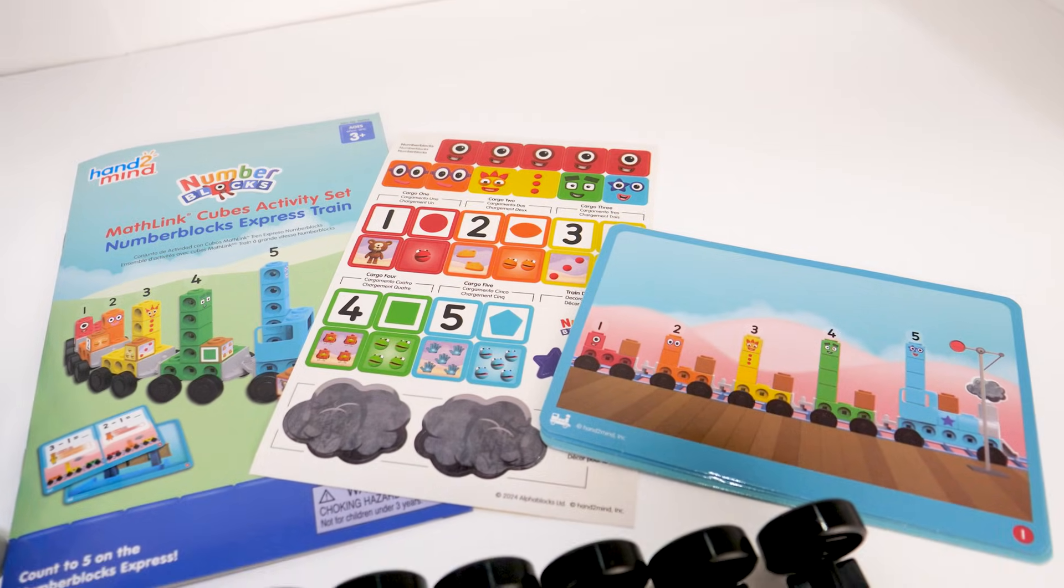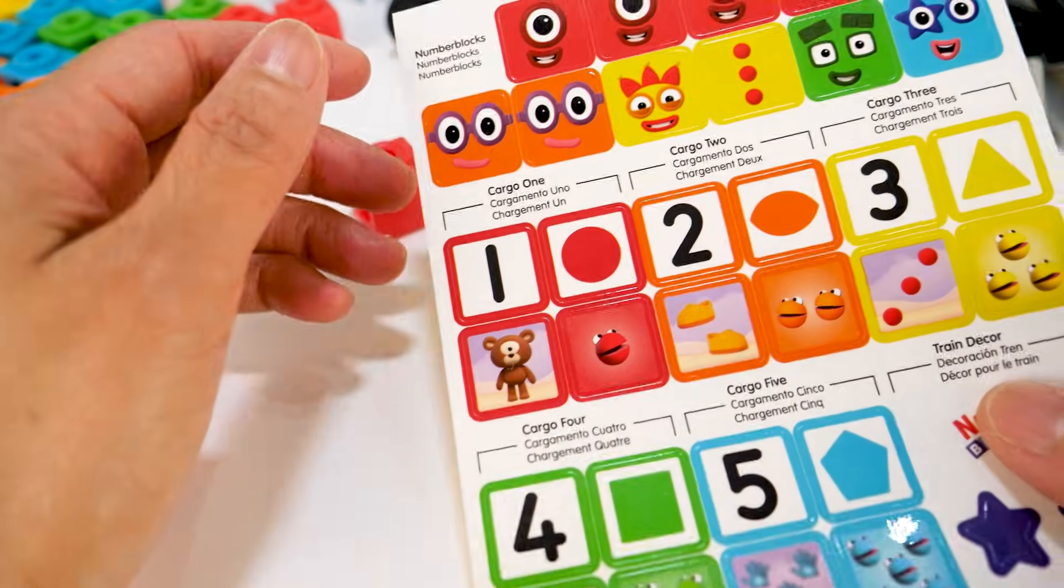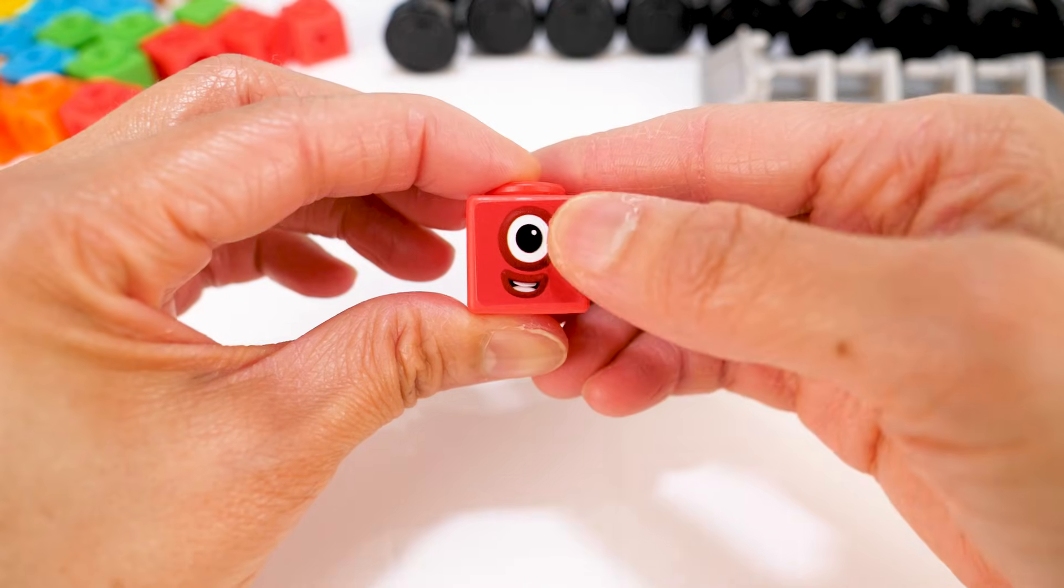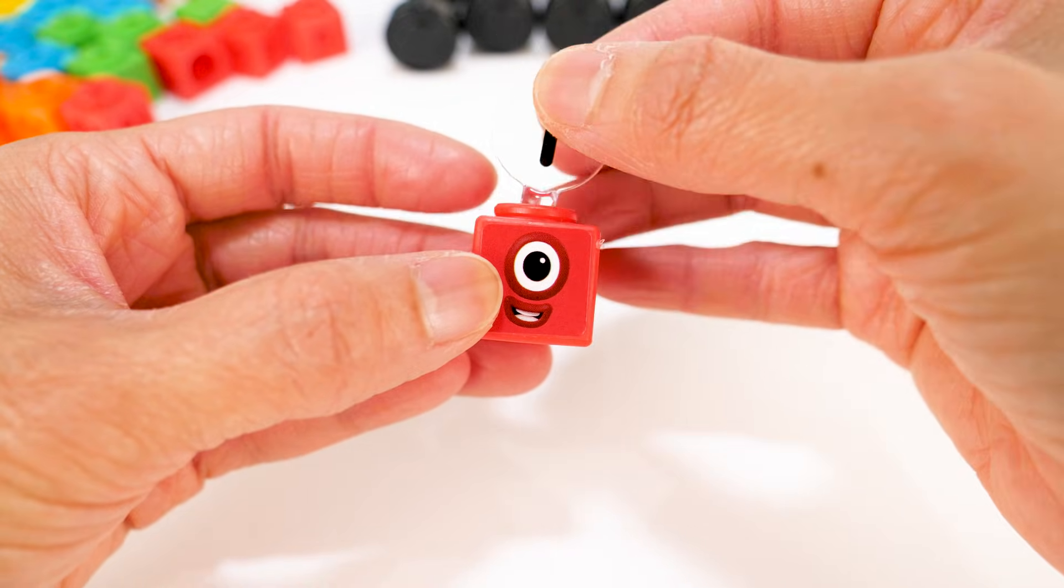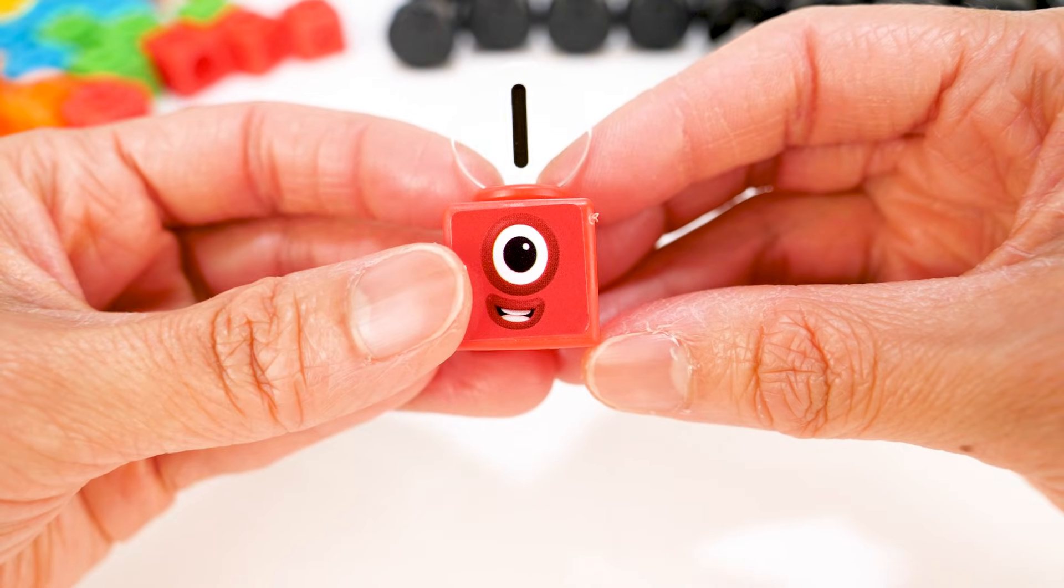It is time to build. First, let's put on a sticker. Then we'll put on the numbering 1. Now we have number block 1.